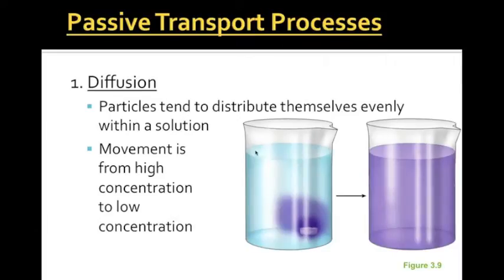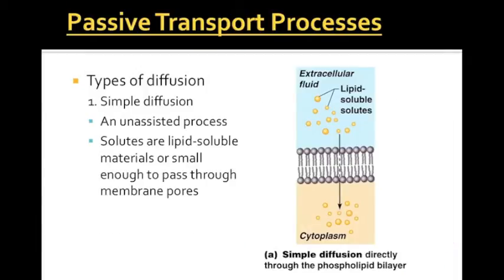The first of four passive transport processes is called diffusion, or simple diffusion. This is when movement goes from a high to a low concentration. Looking at the example on the page, you can see what looks like a tablet with a high concentration that eventually moves throughout the entire substance — from high concentration to low. Here's also an example showing how items diffuse through the plasma membrane: if there is a larger amount of substance on the outside of the cell than inside, it will simply diffuse through.